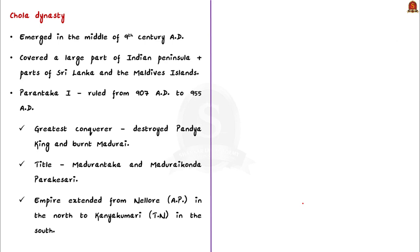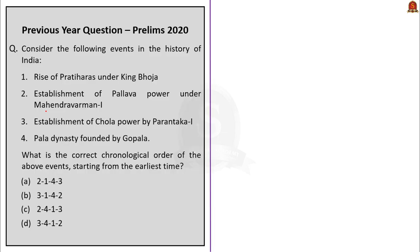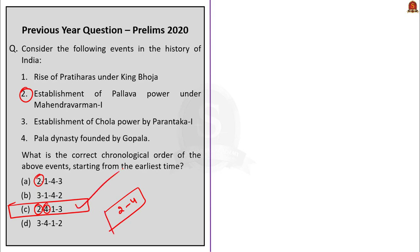The Chola empire emerged in the middle of the 9th century AD, covering a large part of the Indian peninsula as well as parts of Sri Lanka and the Maldives. Parantaka I ruled from 907 to 955 AD. Considering the chronological order: the Pallavas (statement 2) come first at the 6th century, then the Palas (statement 4) in the 8th century, and then the remaining two in the 9th century. Only option C starts with 2, 4 — so option C is the correct answer. This is a factual knowledge-based question.